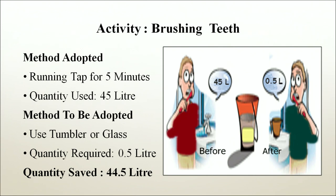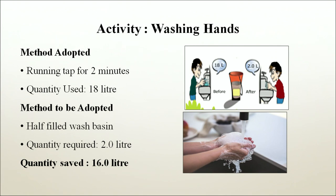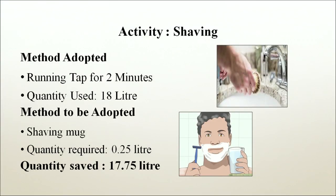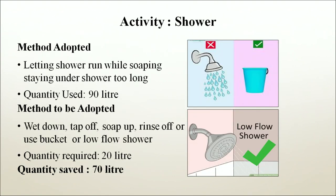Daily routine water-saving activities: For brushing teeth — running the tap for 5 minutes uses 45 litres; using a tumbler or glass requires only 0.5 litres, saving 44.5 litres. For washing hands — running the tap for 2 minutes uses 18 litres; using a half-filled washbasin requires 2 litres, saving 16 litres. For shaving — running the tap for 2 minutes uses 18 litres; using a shaving mug requires 0.25 litres, saving 17.75 litres.